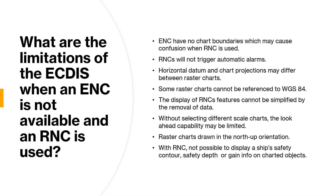Some alarms and indications can be generated with manual addition during passage planning — the user must include these alarms themselves. For example, you have to mark the clearing lines, the ship's safety contour lines, and isolated dangers, just like you do on a paper chart, in order to recover some of the safety functionality of the ECDIS system. The third limitation is that horizontal datum and chart projections sometimes differ between raster charts — they are not always based on WGS 84.